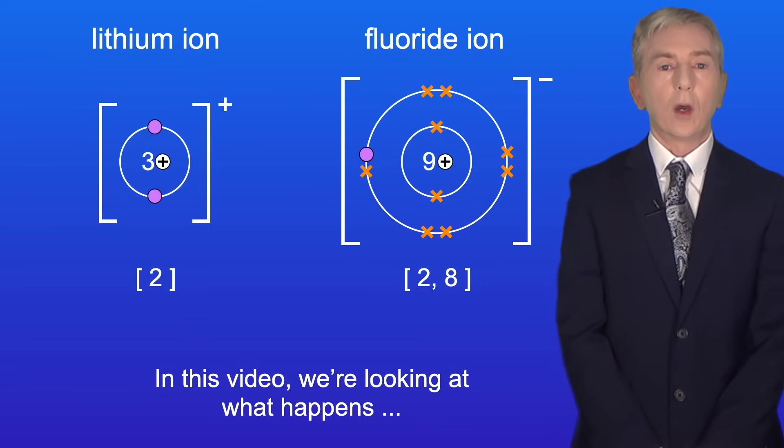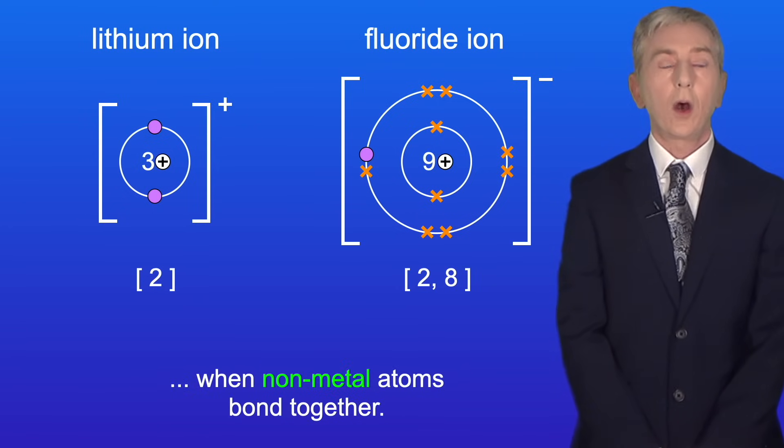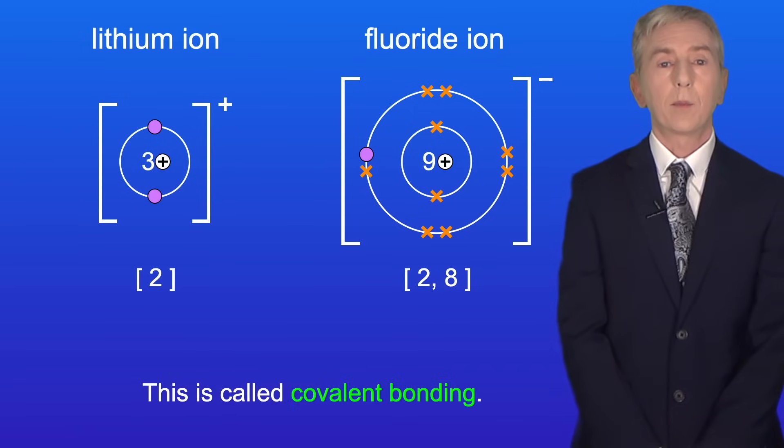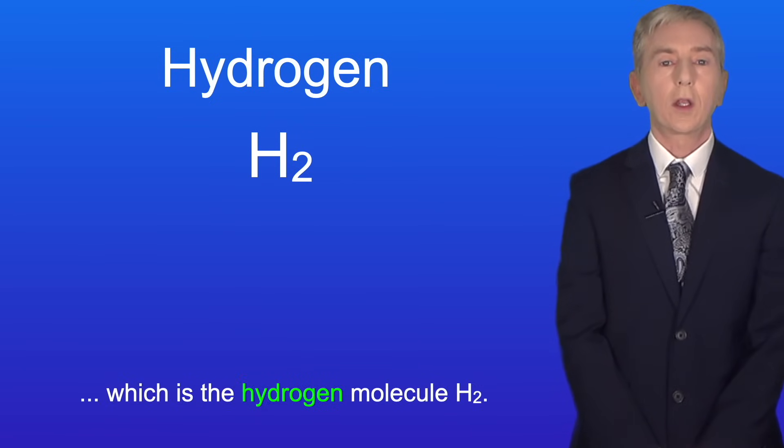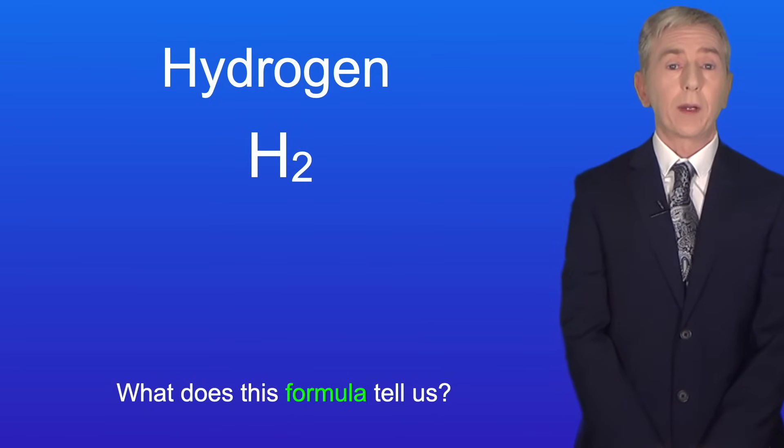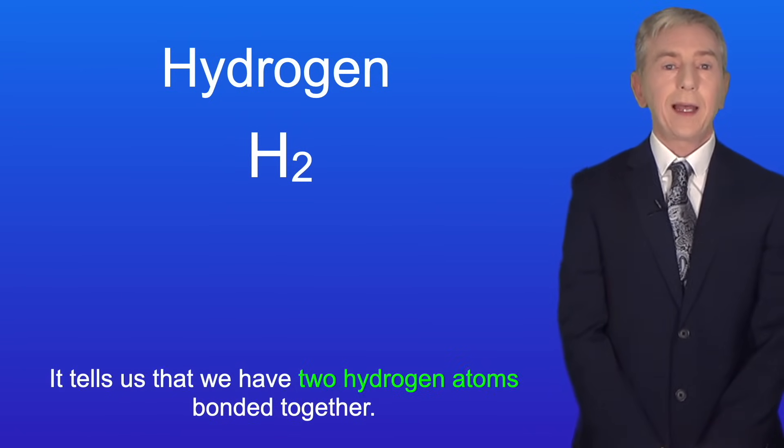So in this video we're looking at what happens when nonmetal atoms bond together. This is called covalent bonding. We're going to start by looking at a very simple covalent molecule, which is the hydrogen molecule H2. So what does this formula tell us? Well it tells us that we have two hydrogen atoms bonded together.